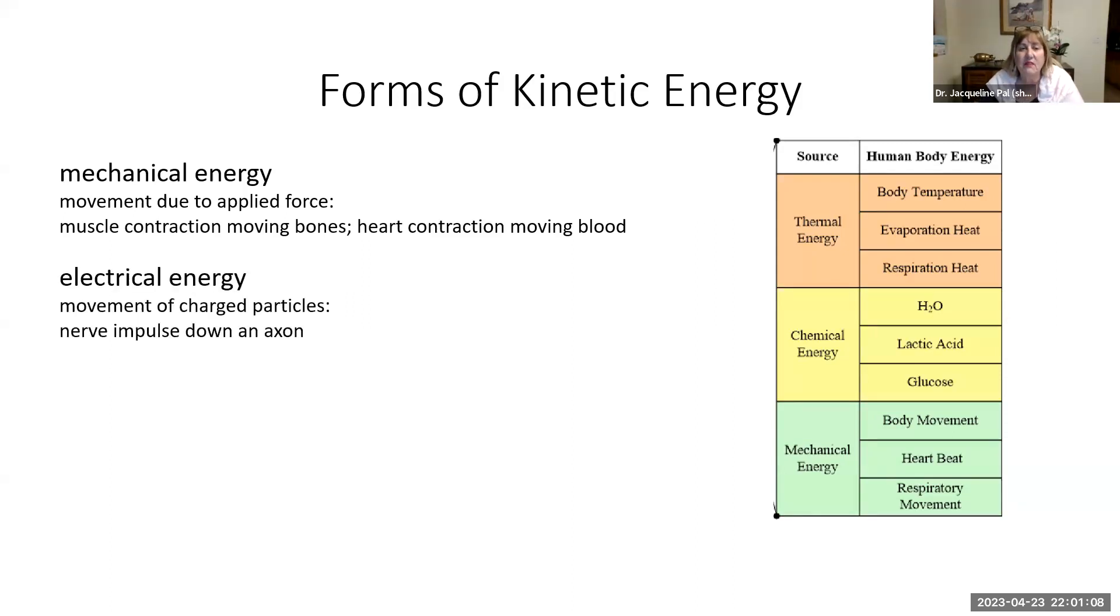The second type of energy is electrical energy. As you learn in anatomy, we have nerve impulses that travel down axons and they're related to movement of charged particles like sodium or potassium. This is all electrical energy occurring.